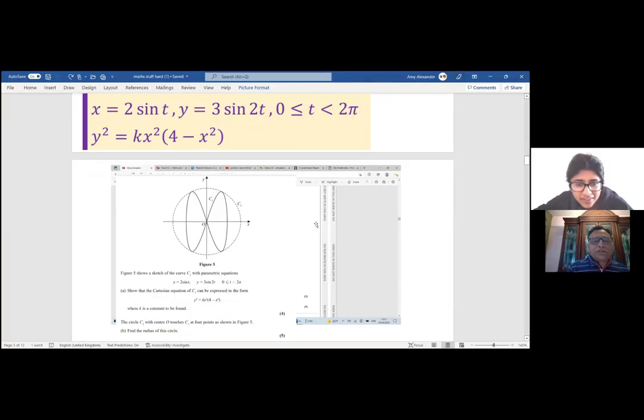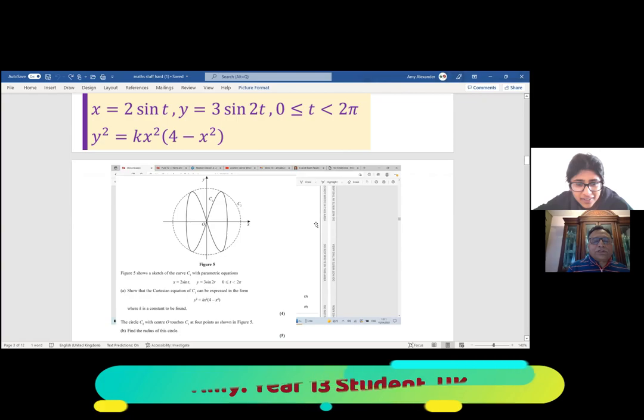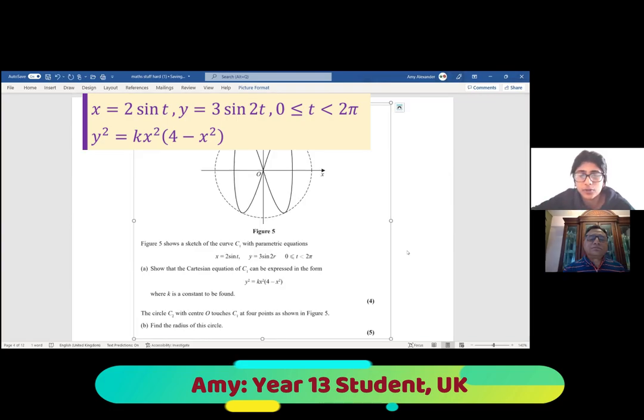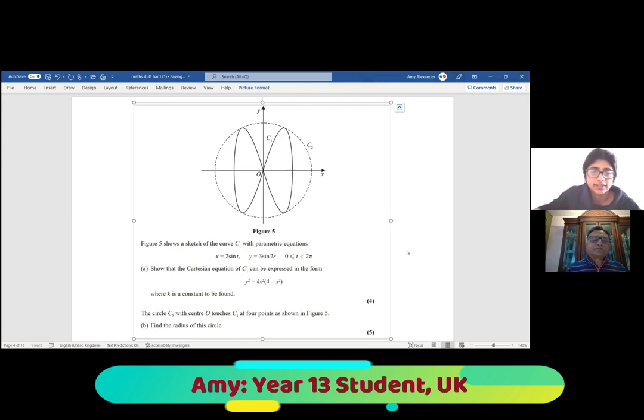This is a parametric question. Figure 5 shows a sketch of the curve C1 with parametric equations x equals 2 sin t and y equals 3 sin 2t where t is between 0 and 2π. Part A showed that the Cartesian equation of C1 can be expressed in the form y² equals kx² times (4 minus x²) where k is a constant to be found.